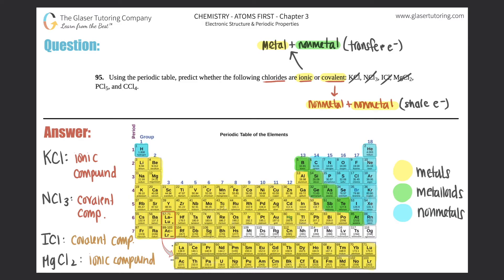PCl5: phosphorus and chlorine. Chlorine is right here on the periodic table, and phosphorus is two elements to the left of chlorine. Phosphorus is still a nonmetal. Two nonmetals coming together means this has to be a covalent compound — they will share electrons when they bond.